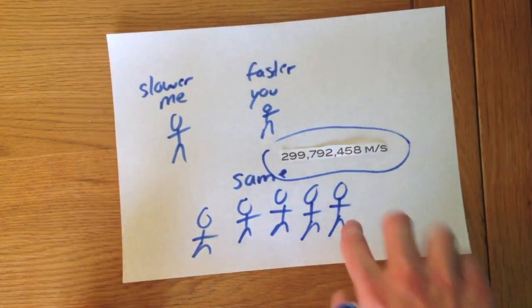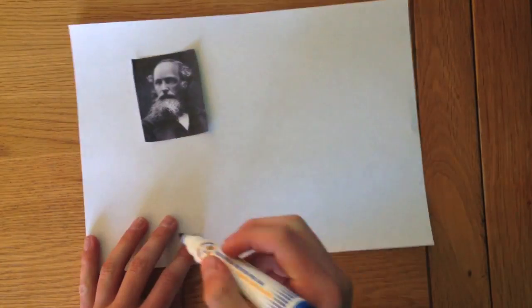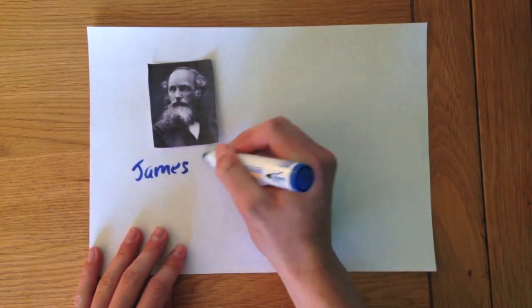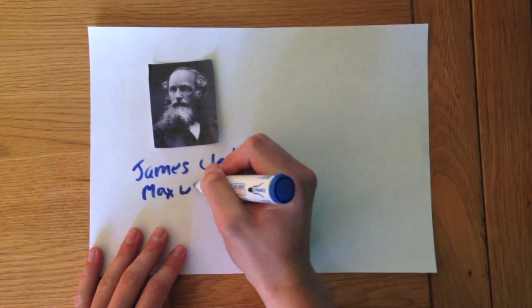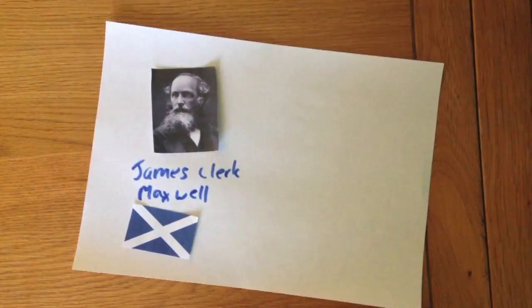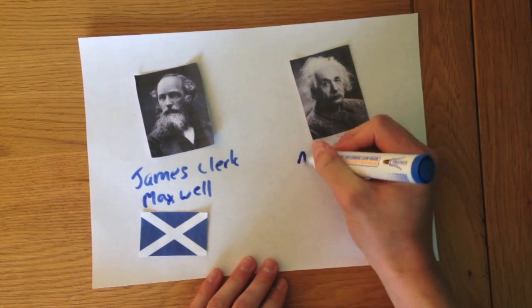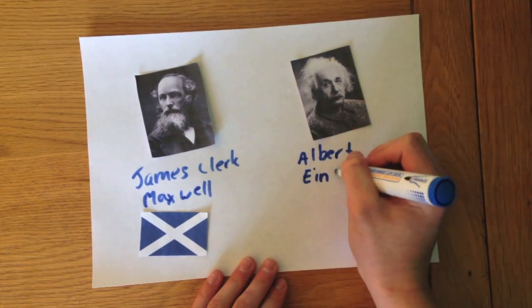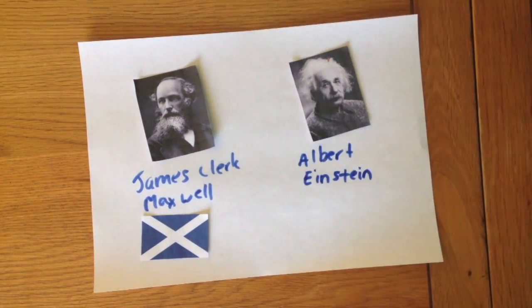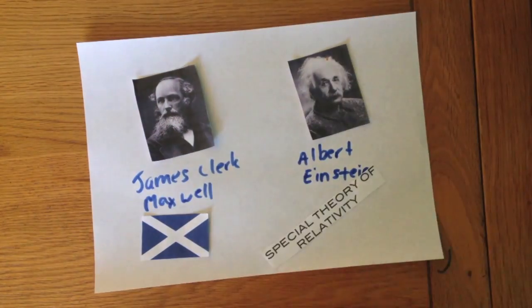This discovery was made by James Clerk Maxwell, a Scottish physicist in the 19th century. Albert Einstein used this discovery to demonstrate his Special Theory of Relativity.